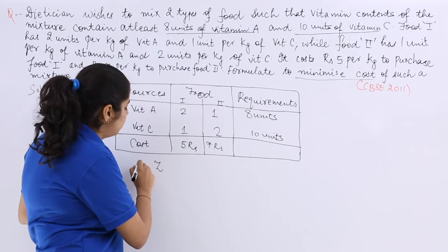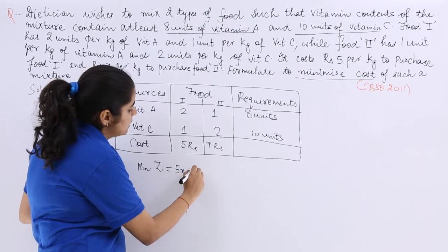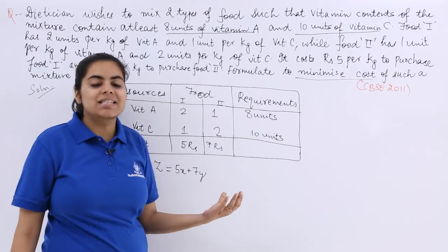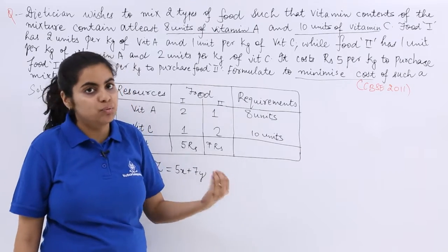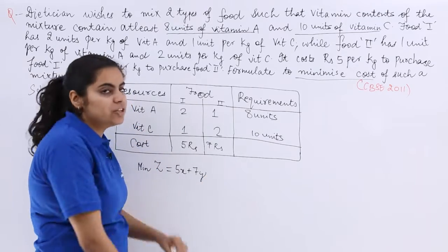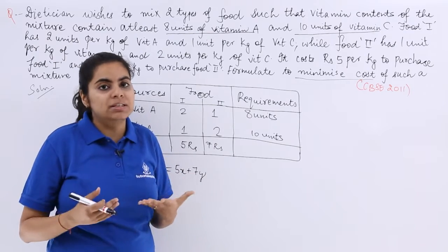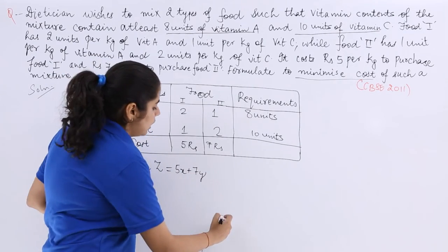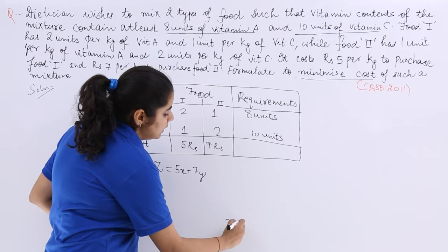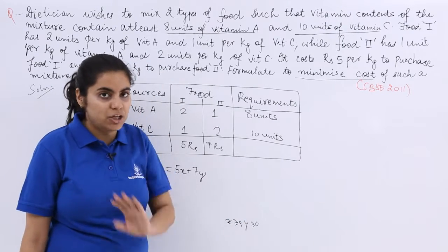So if I name the objective function as Z, it is minimum of Z which is 5x plus 7y, where x is units per kg for food 1 and y is units per kg for food 2. So you have to mention what is x and y. Now definitely the requirement can never be negative. So the constraints would be x greater than equal to 0, y greater than equal to 0 initially. The first thing is very sure.